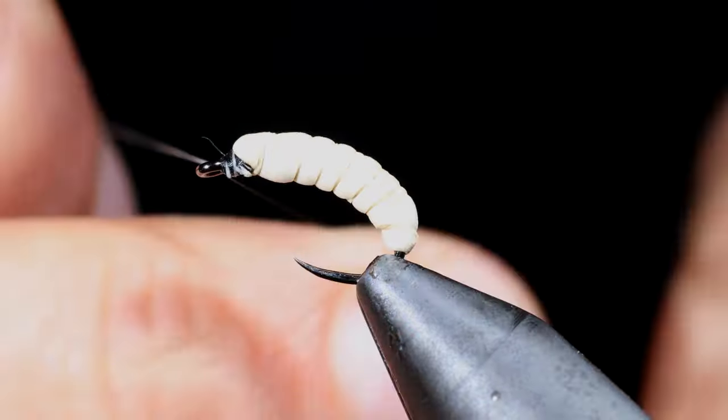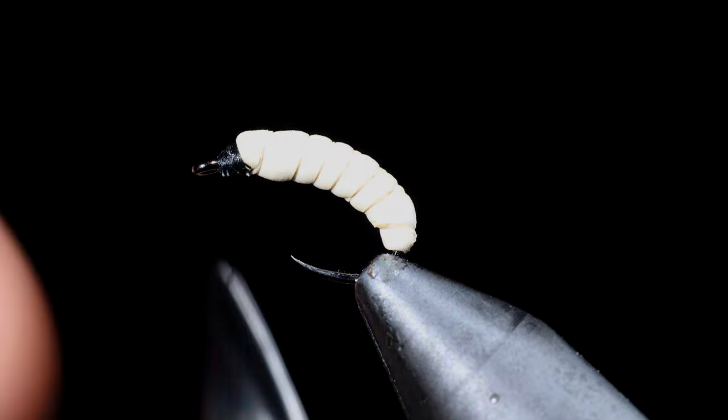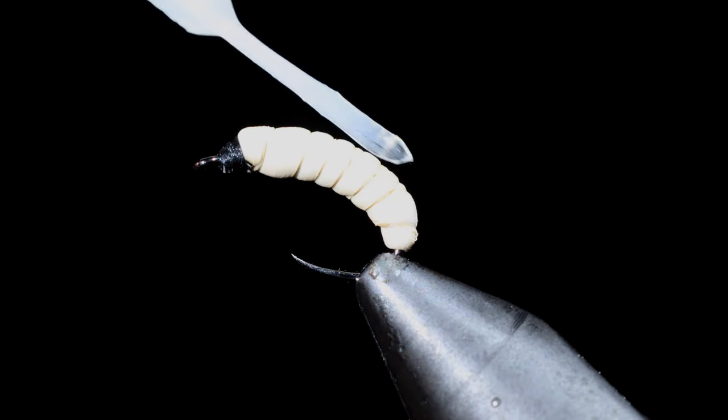Once we reach the head of the fly, we will secure the thread and snip free. Whip finish, snip your thread free and grab some UV resin.